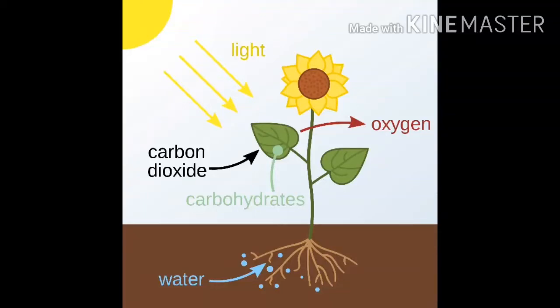Hello friends, welcome back to our channel S Study Icon. Today we will discuss part one of basic science biology from the book Archimedes School. Let's start. We will talk first about living things. Living things move on their own.